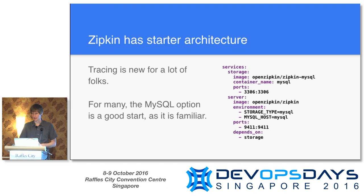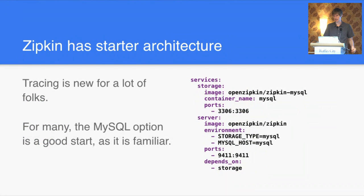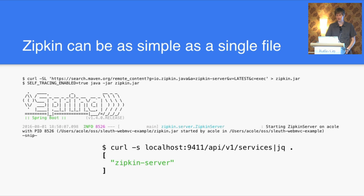You don't have to use Docker — we have Docker images, but it can be as simple as a single file. There's a Cloud Foundry BOSH release, a Mesos framework, and a Kubernetes thing available. At the end of the day, the server component is Java code in a single JAR file, so you can put it in pretty much anything — Puppet or whatever.